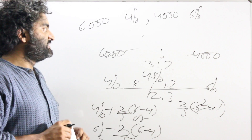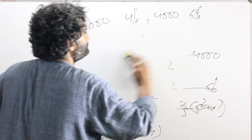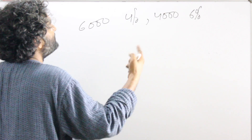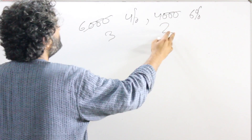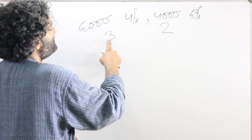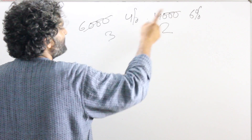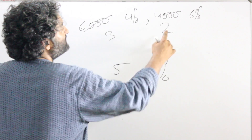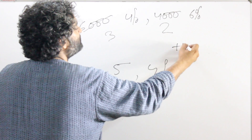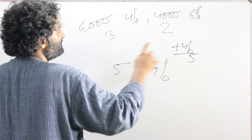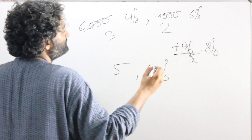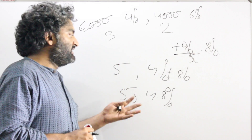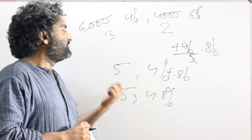We can also use the divide equally approach, knowing that the ratio matters not the exact numbers. So think of it as 3 people with 4% and 2 people with 6%. Take 4% as the base average and bring all 5 people to 4%. But the truth is these 2 people had 2% extra each, so overall they carried 4% extra. Divide this 4% extra between 5 people — everybody gets 0.8% extra. So the overall rate is 4% plus 0.8%, which is 4.8%.